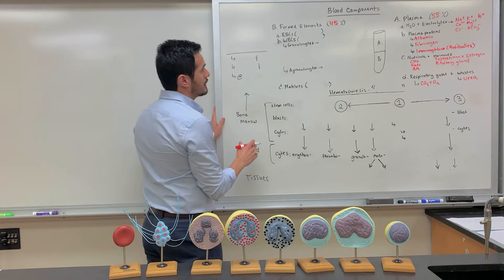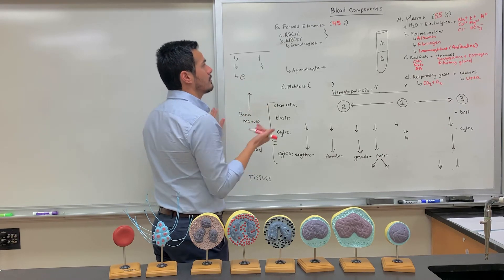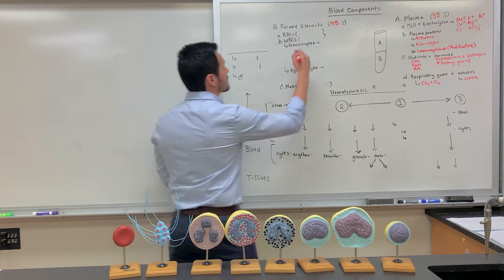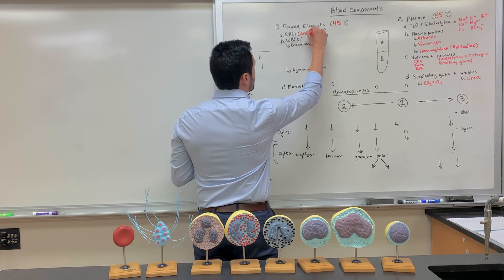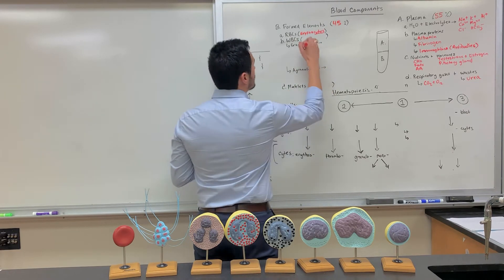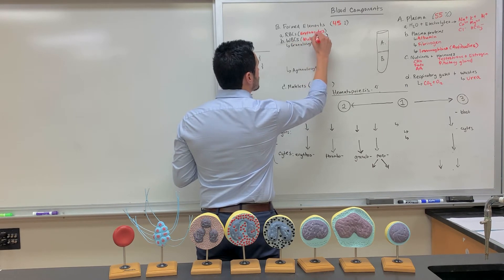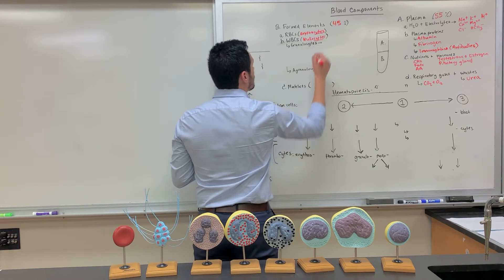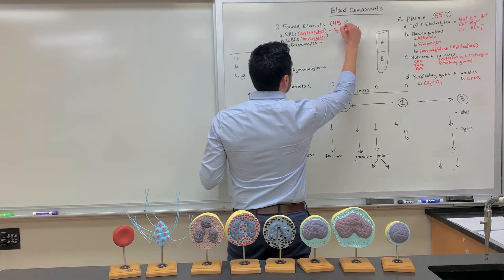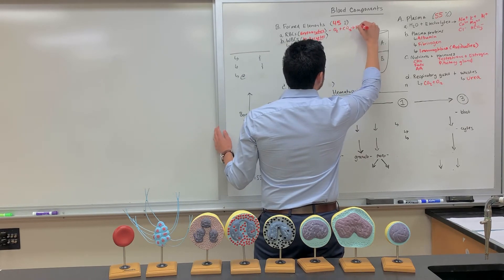Moving on to the formed elements: you have red blood cells, white blood cells, and platelets. Another term for red blood cells is erythrocytes — 'erythro' refers to the color red, and 'cytes' means cell. White blood cells are also known as leukocytes, 'leuko' meaning white. The function of red blood cells is to transport oxygen and carbon dioxide using a carrier known as hemoglobin. We will discuss more about hemoglobin a little bit later.